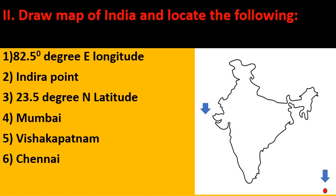Secondly, Indira Point — there is a red dot in Greater Nicobar Island with an arrow mark showing Indira Point. Next, 23.5 degrees North latitude, that is the Tropic of Cancer, with an arrow mark showing it. This line divides India into two equal parts. Mumbai is shown as a red dot on the western coast of India with an arrow mark.